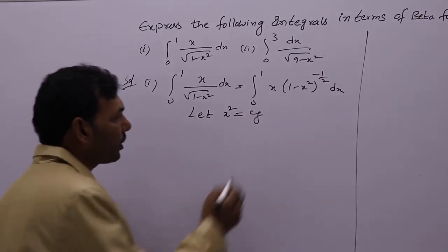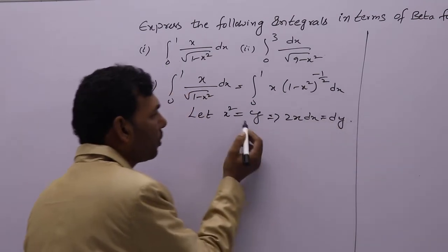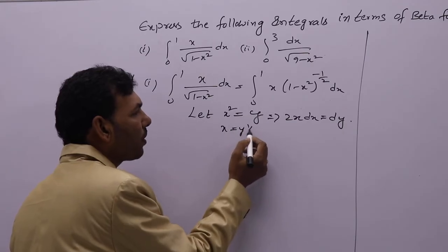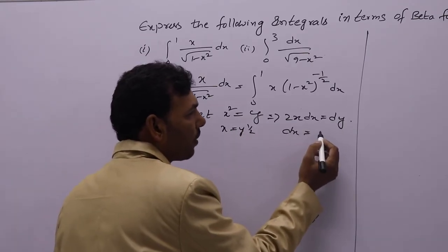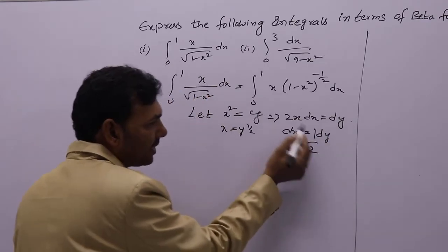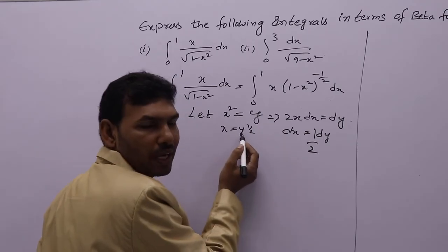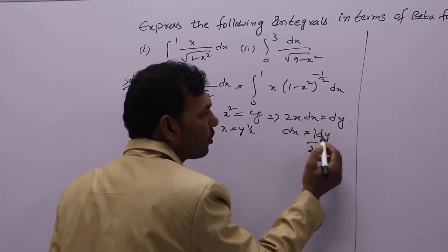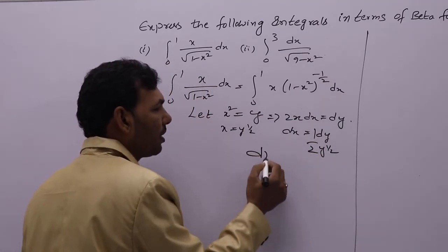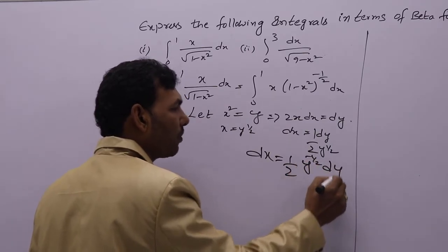If you differentiate, what you will get? 2x dx equal to dy. We know that if x square equal to y, x will be y power 1 by 2. Then dx equal to 1 by 2 — if you send x to the denominator, x is y power 1 by 2. So dx is 1 by 2 y power minus 1 by 2 dy.